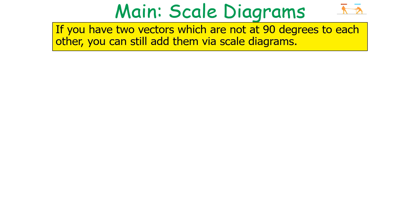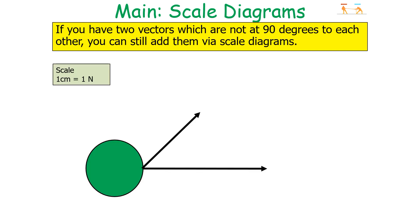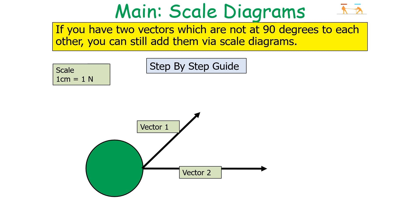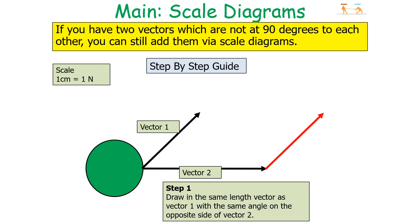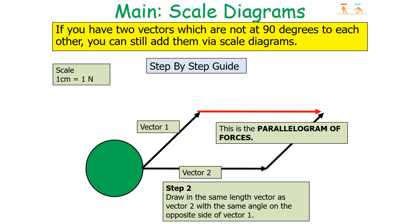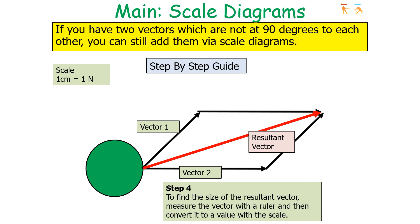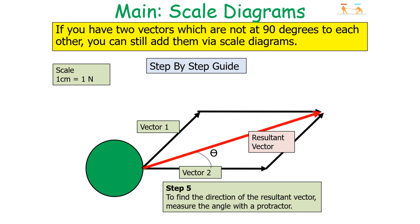If you have two vectors which are not at 90 degrees to each other, you can still add them using the scale diagram method with the parallelogram of forces. With a scale of 1 cm = 1 newton, draw vector 1 and vector 2, then reflect vector 1 on the opposite side of vector 2, and reflect vector 2 on the opposite side of vector 1, creating a parallelogram. Draw the resultant vector from the start of the vectors to where the two new lines meet. Measure its length with a ruler, convert using the scale, and measure the angle with a protractor.